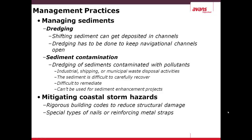Mitigating coastal storm hazards includes strict building codes to reduce structural damage to beaches — for example, using different types of nails and metal straps. And of course coastal zone management — deciding who can build where.